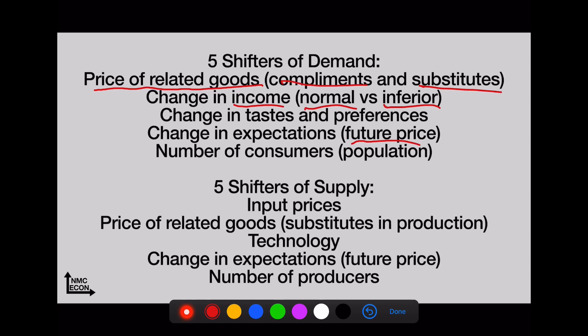The shifters of supply: input prices—big ones here would be oil, electricity, and wages. That's the price of labor. The price of related goods—substitutes in production can be a little confusing. Here's a great example: you run a factory that makes basketballs, but you hear soccer balls can actually charge a higher price. What would you prefer to make? Well, you're going to prefer to start making the soccer balls. You can easily switch your factory over to that, so you'll supply less basketballs and more soccer balls.